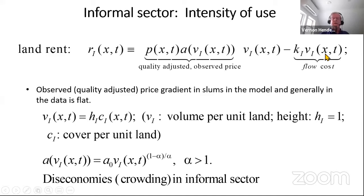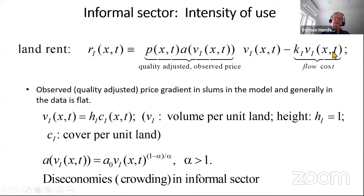In the informal sector, you've got a flow cost — a rental on your mechano-parts or the instant cost of mud that you have to redo — which is just a constant cost times the volume.